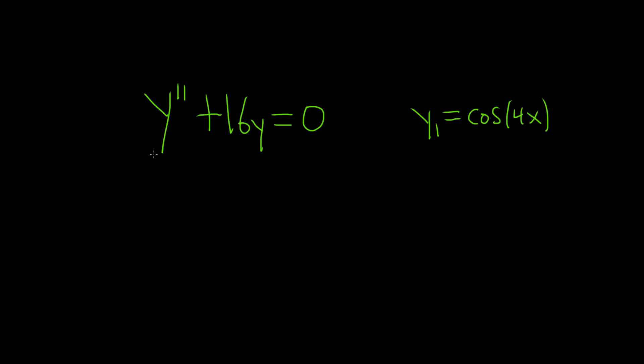So there's a formula we can use, but before we use it, we should always do a mental check and make sure that this is written in standard form. So the standard form that we want to write it in is y double prime plus p of x times y prime plus q of x times y equals 0.